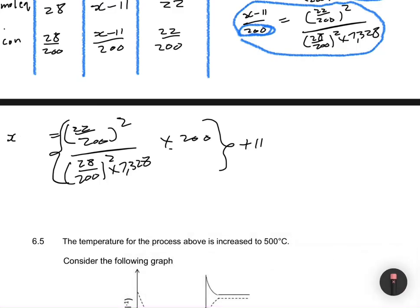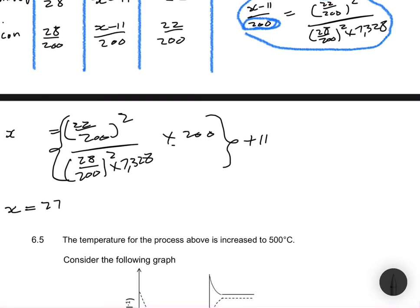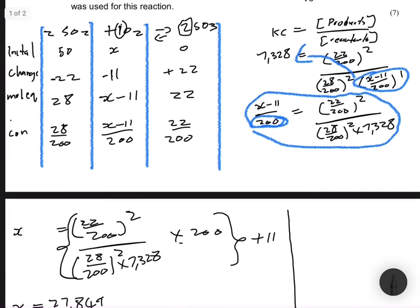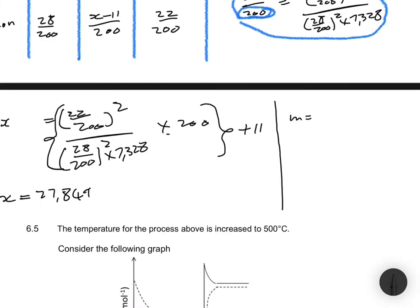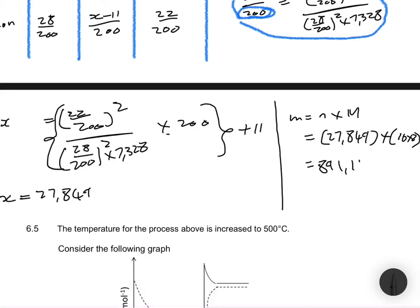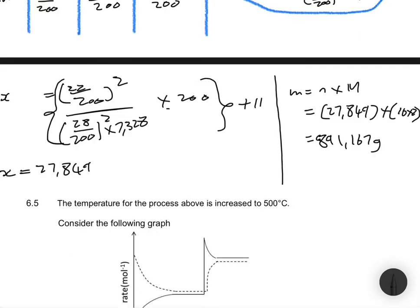Evaluating the expression gives x = 27.849 moles. We can now calculate the initial mass of O₂. Mass = moles × molar mass = 27.849 × (16 × 2) = 27.849 × 32 = 891.167 grams. This is a lengthy calculation — you can rewind the video for more clarity.